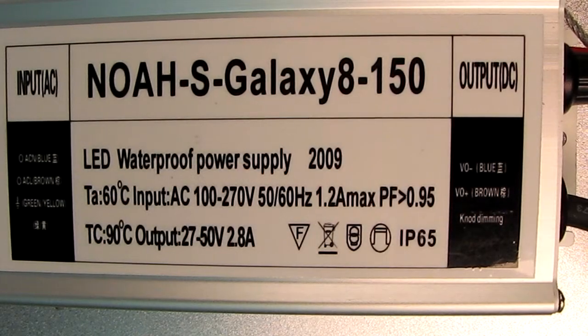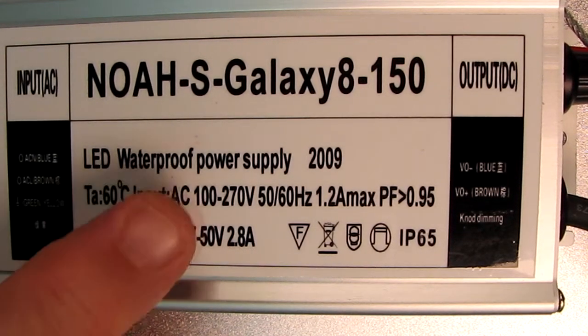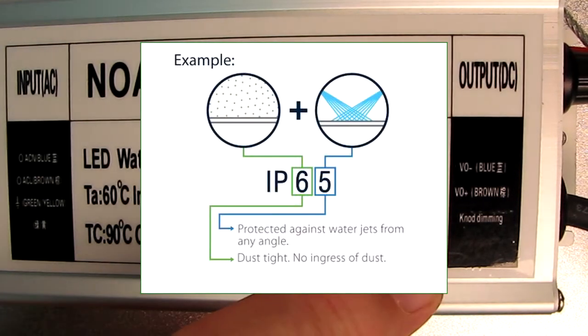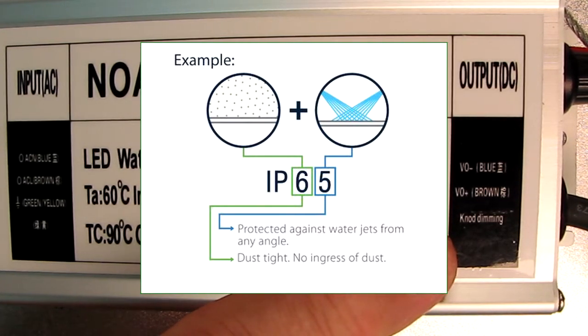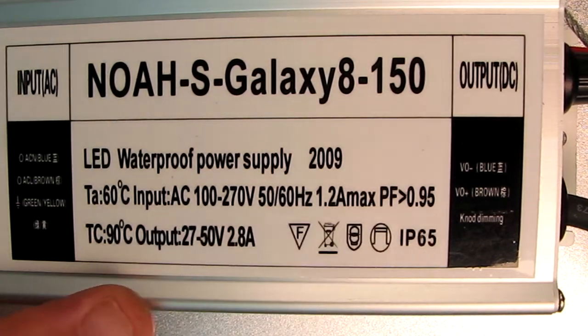On the label on the electronics, it has all the information there. You can see it is waterproof LED and it is IP65. I'll have a slide to show you how waterproof that is. It also gives this number right here which is the quality of the light itself and the maximum current that's ever going to draw.